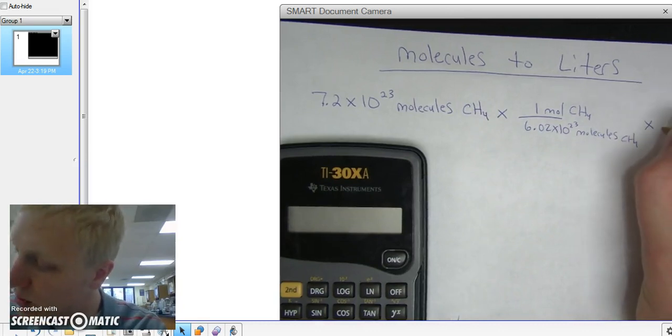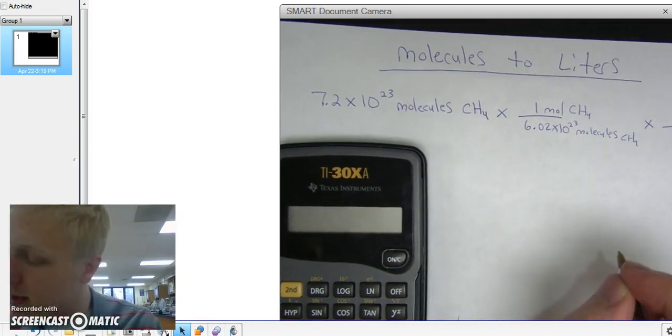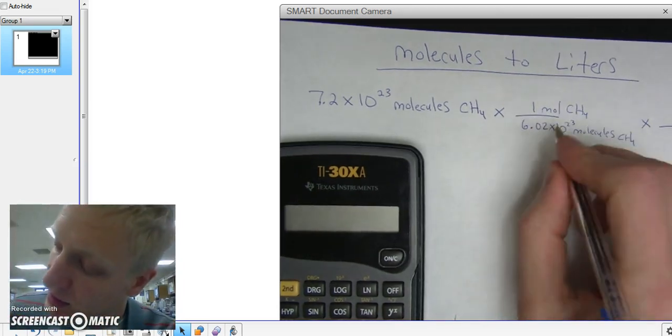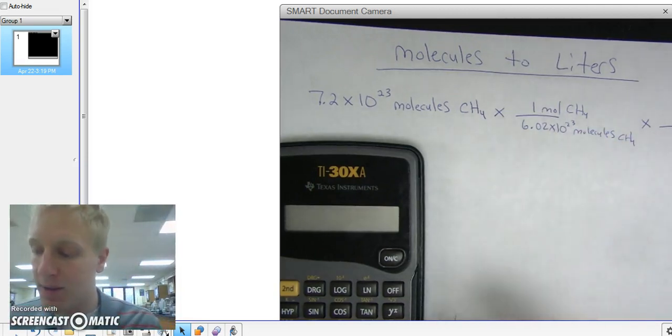And then, since it's a two-step problem, I am going to have two conversion factors. And it's easier just to have one conversion factor right after the other.